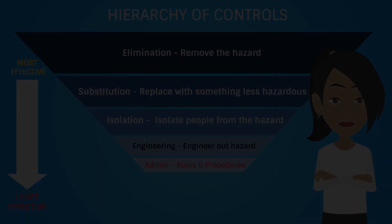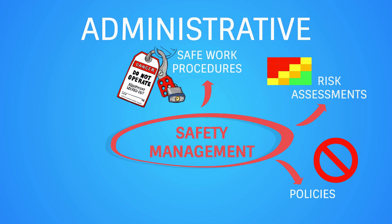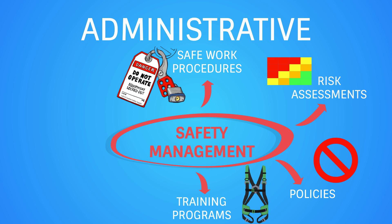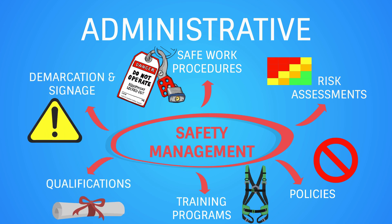Administrative controls include safe work procedures, risk assessments, policies, training programs, qualifications, demarcation, and signage.